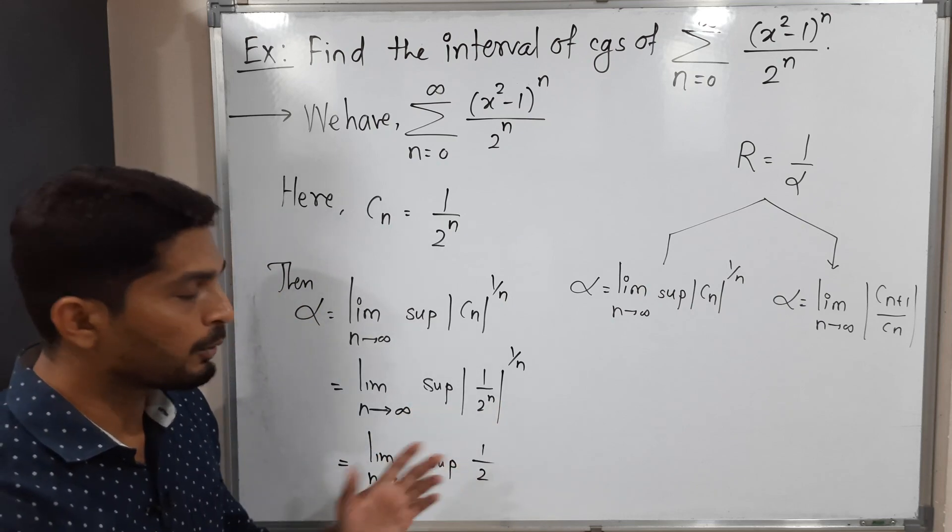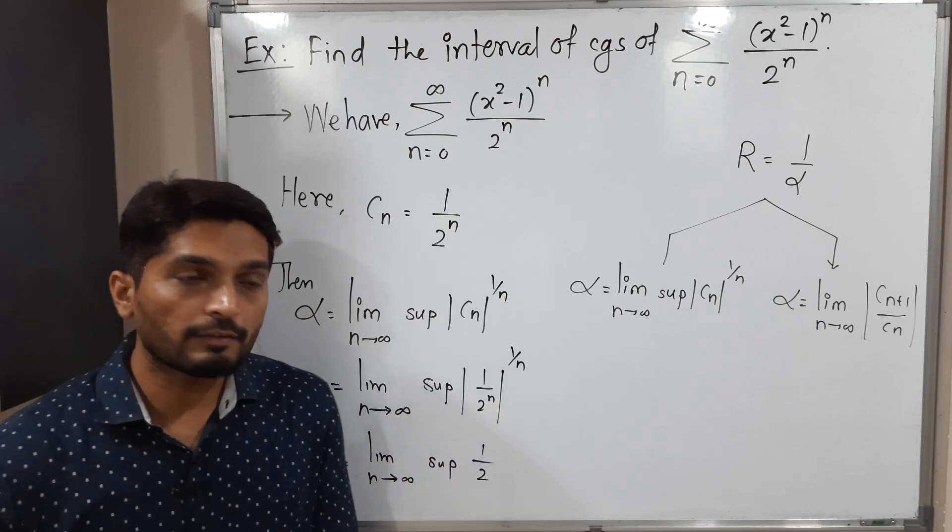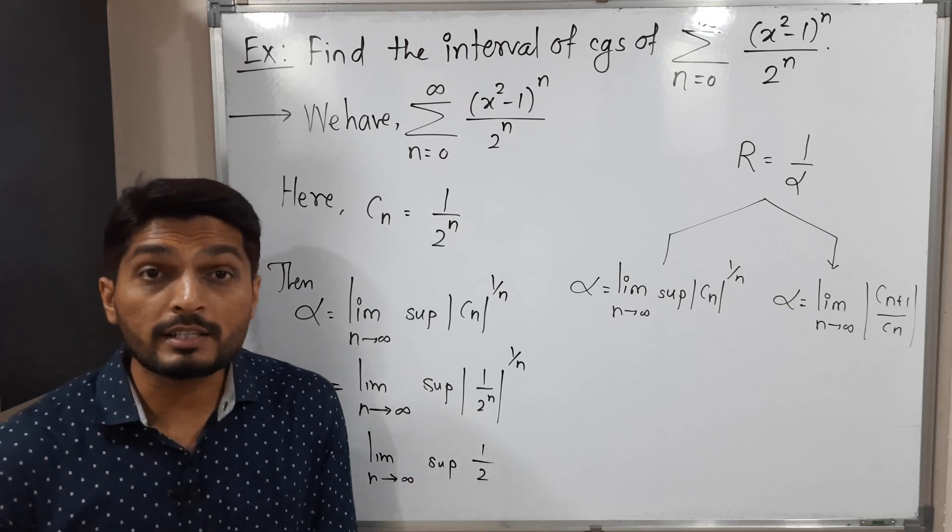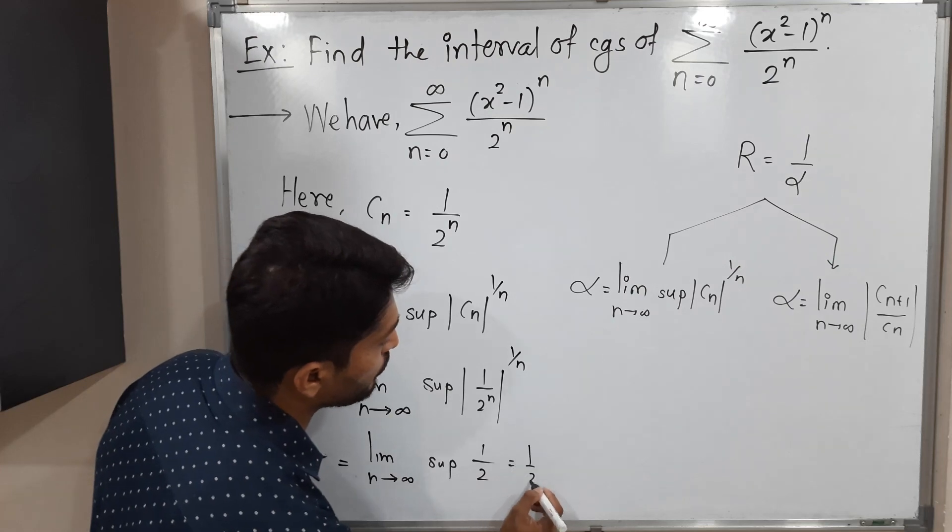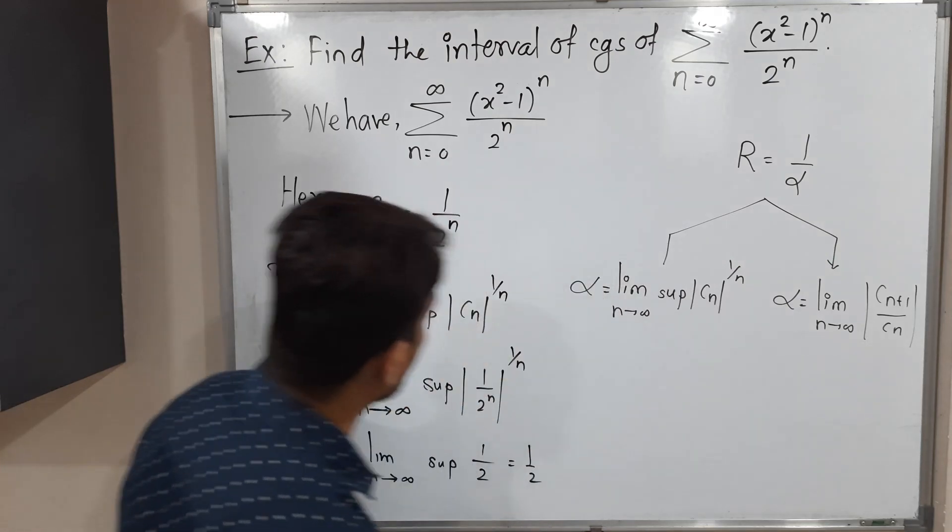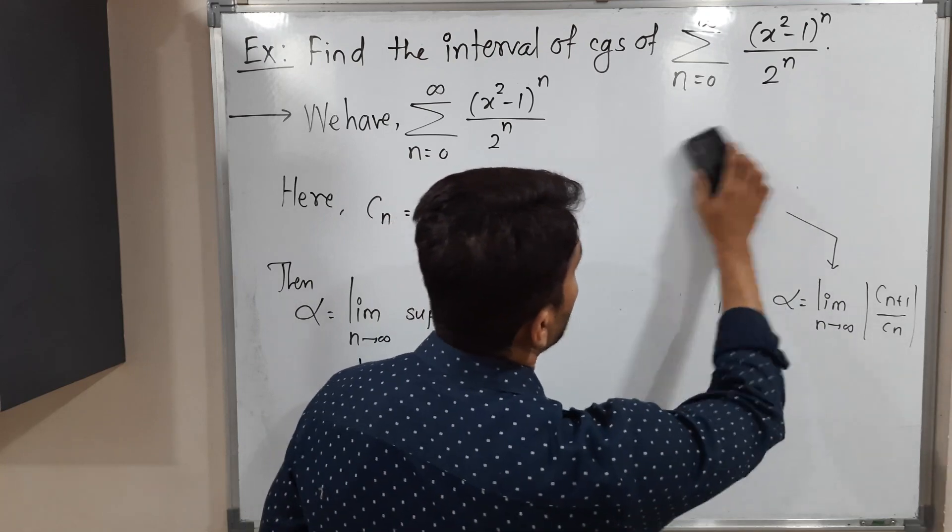Actually no need to apply the modulus since it's a positive real number. If you take supremum, 1/2 is constant, so its value will be the same: 1/2. So finally we got the value of α which is 1/2.